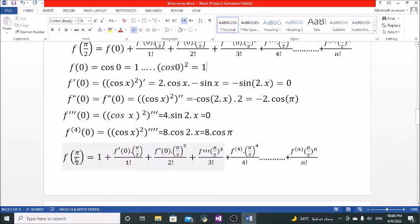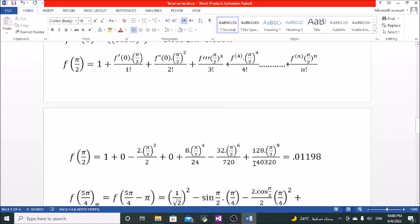And substituting in all these terms, we'll get that f of pi over 2 equals 1 plus plus plus plus. And substituting if we get to the 8th differential, we would have 1 plus 0 minus plus plus 0 minus plus 8 pi over 2 all to the power 4 over 24. That's factorial 4, factorial 5, and so on.